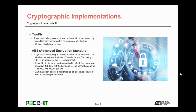And then there's AES, Advanced Encryption Standard. It's a symmetrical cryptographic encryption method developed on behalf of the National Institute of Standards and Technology — NIST — which is an agency of the U.S. government. It is a block cipher in which the block size is always 128 bits, but the key used for the encryption can be 128 bits, 192 bits, or 256 bits. AES has been adopted worldwide as an acceptable level of encryption and performance.